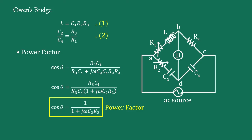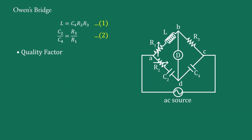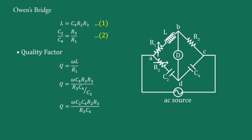Now for quality factor Q: for an R1-L series connection it is defined as Q equal to omega·L upon R1. Putting the value of L from equation 1 and R1 from equation 2, we get Q equal to omega·C4·R2·R3 upon R3·C4/C2. The C4 and R3 terms cancel, therefore Q equal to omega·C2·R2. You may find that the quality factor is directly proportional to capacitance, so for a high quality factor we have to choose a large capacitance.